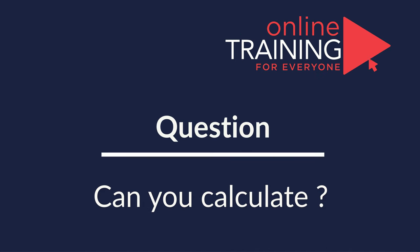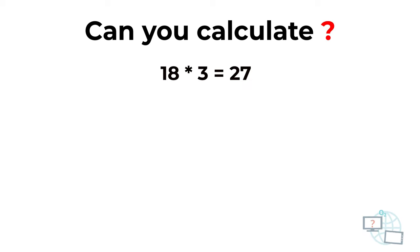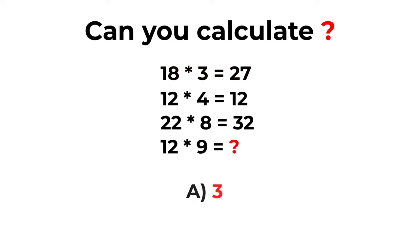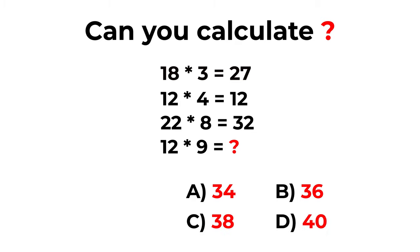Here is an interesting problem from the real test. You are presented with three full expressions: 18 by 3 equals 27, 12 by 4 equals 12, 22 multiplied by 8 equals 32. You need to calculate the missing number in the expression 12 multiplied by 9. You have four choices: A) 34, B) 36, C) 38, and D) 40.